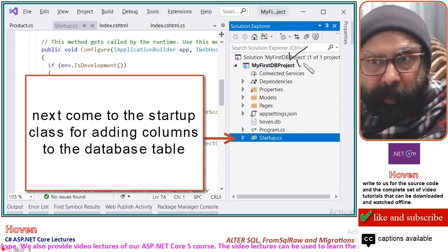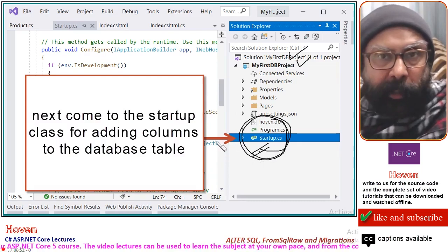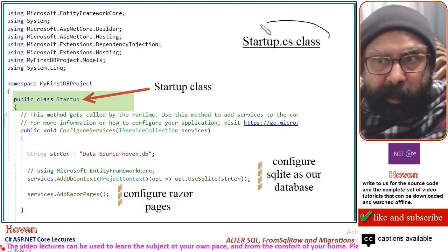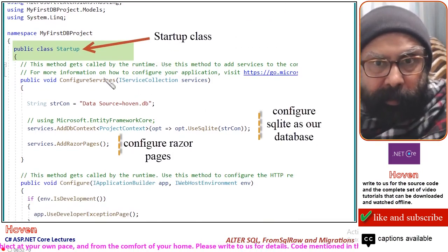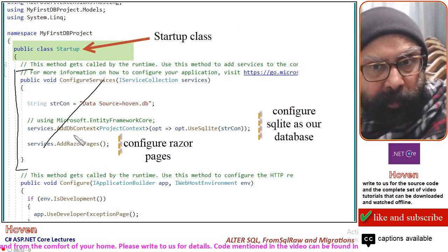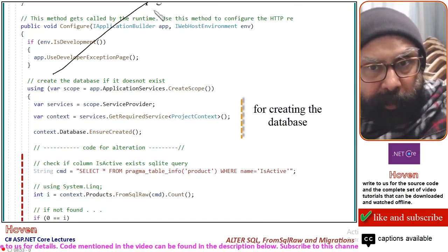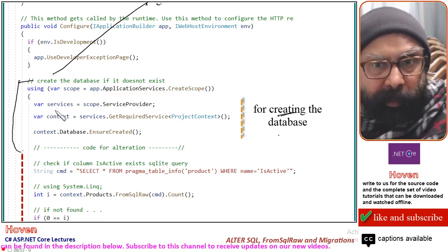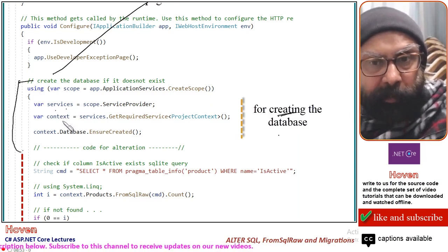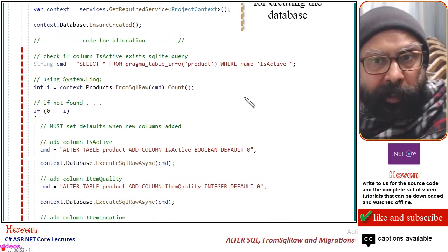Come to the solution explorer, find your project, and open the startup.cs file. This is the startup class we are going to modify. It has ConfigureServices — no change required there. Then we have the Configure method. This part of the code was already used for creating the database: we obtained the service provider, got the context, and called EnsureCreated to create the database. Today we need to add additional code for the alteration.